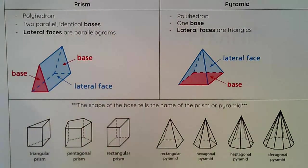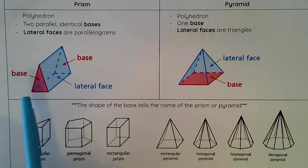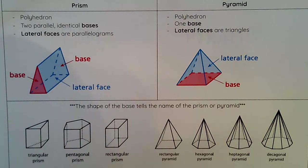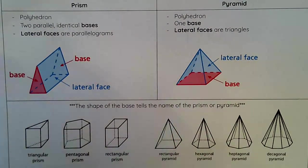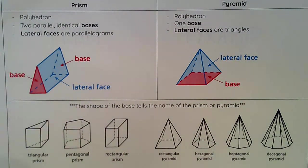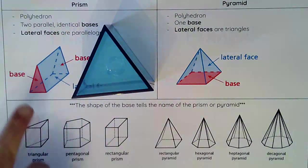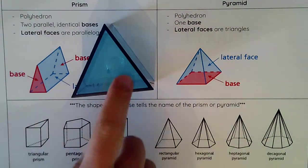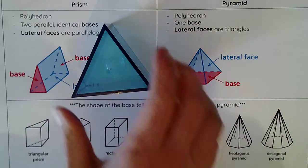So we've got prisms and pyramids — they're similar but different. When you have two bases, that is a prism, and when you have one base, it is a pyramid. There are many different kinds of prisms and pyramids. I have a small list here and I'm going to show you a couple of 3D ones as well.